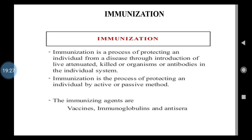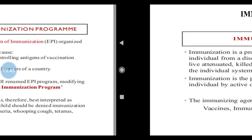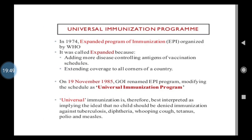Immunization is a process of protecting individuals by active or passive methods. Immunizing agents may be vaccines, sera preparations, or immunoglobulin preparations. The Universal Immunization Program exists, and each country has its own immunization schedule for children. In 1974, the Expanded Program of Immunization was organized by the World Health Organization. It was called 'expanded' because of adding more disease-controlling antigens to the vaccination schedule and extending coverage to all corners of countries.